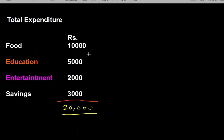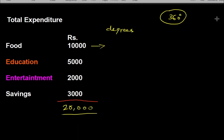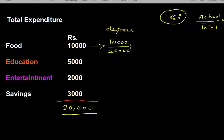This particular amount should be converted into degrees. A circle has 360 degrees, so we are going to convert each value into degrees. The formula is: actual value divided by total, then multiplied by 360. So I'm going to calculate 10,000 divided by 20,000 into 360.